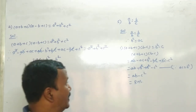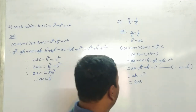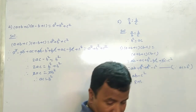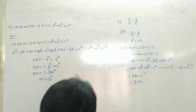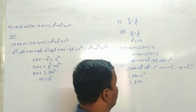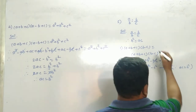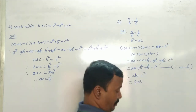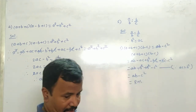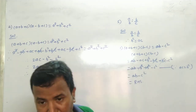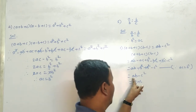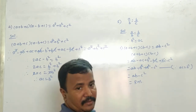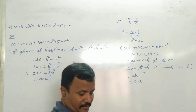तो AB minus B square plus B square minus C square। Again minus plus cut होंगे — बचा AB minus C square। And that is our RHS। यही हमें प्रूफ करना था: AB minus C square — proved।